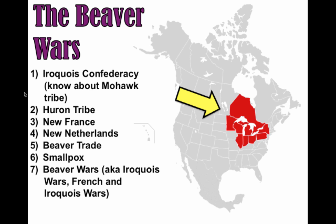Those are the key terms for those of you in the AP US History world. There's a map showing where the battles took place — there are a whole bunch of them, but you don't need to worry about individual battles.